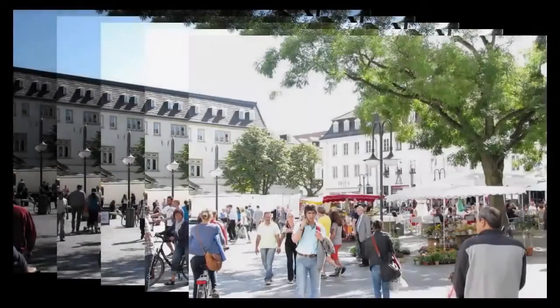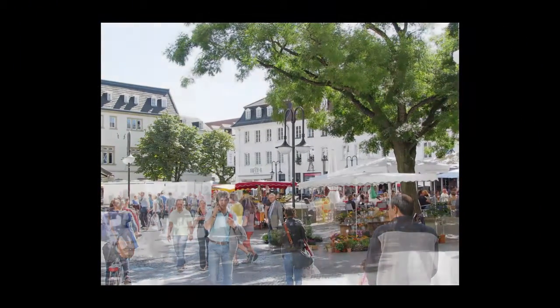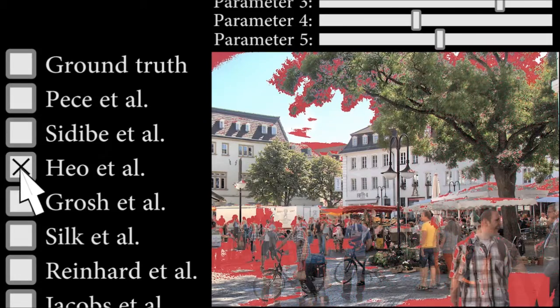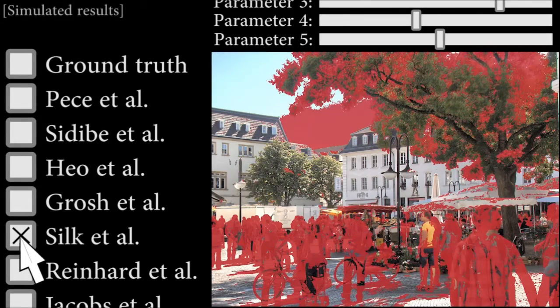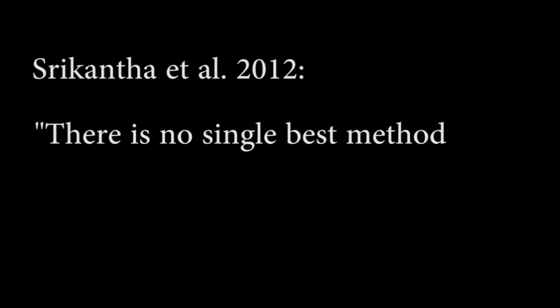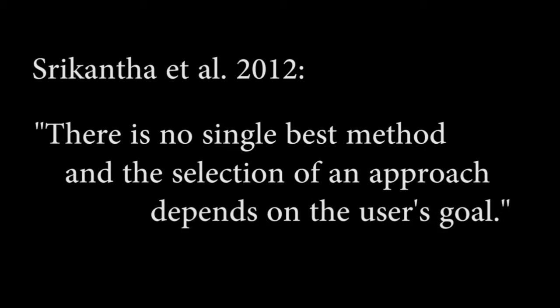Most approaches to this problem attempt explicit motion detection, relying on an ability to test if the colour observed at each pixel location is consistent. With over 15 methods in the literature, each requiring fixed thresholds unlikely to generalise well to different cameras and exposure settings, Sridhankar et al. conclude in their 2012 review that there is no single best method and selection depends on the user's goal.